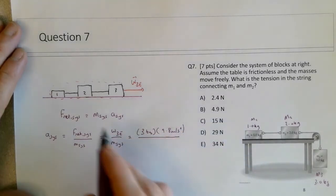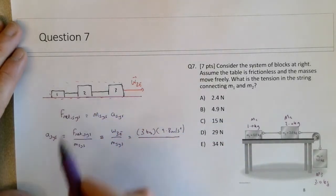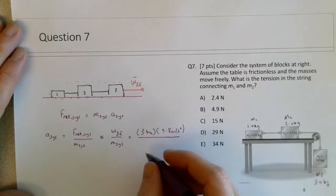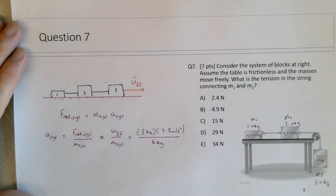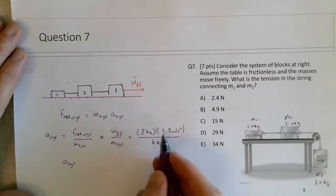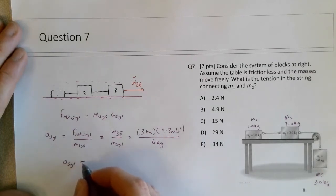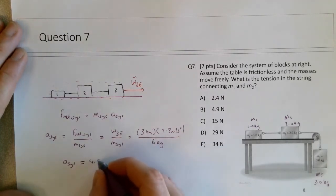So this is the weight force on 3 by the earth, divided by the mass of the system. This would be 3 kg times 9.81 meters per second squared, all divided by the total mass of the system. 1 plus 2 is 3, 3 plus 3 is 6. So if you work this out, this is about 30, 30 divided by 6, you should end up here at 4.9 meters per second squared.